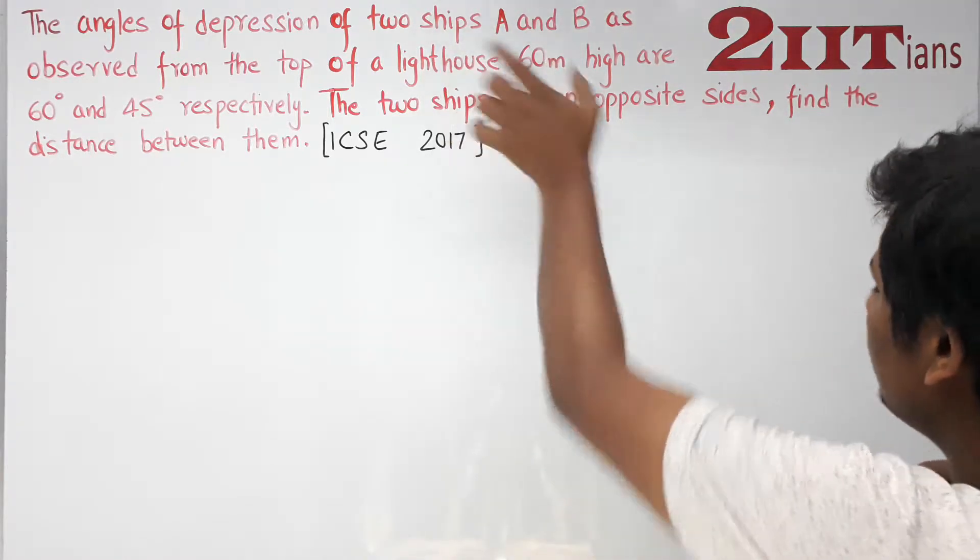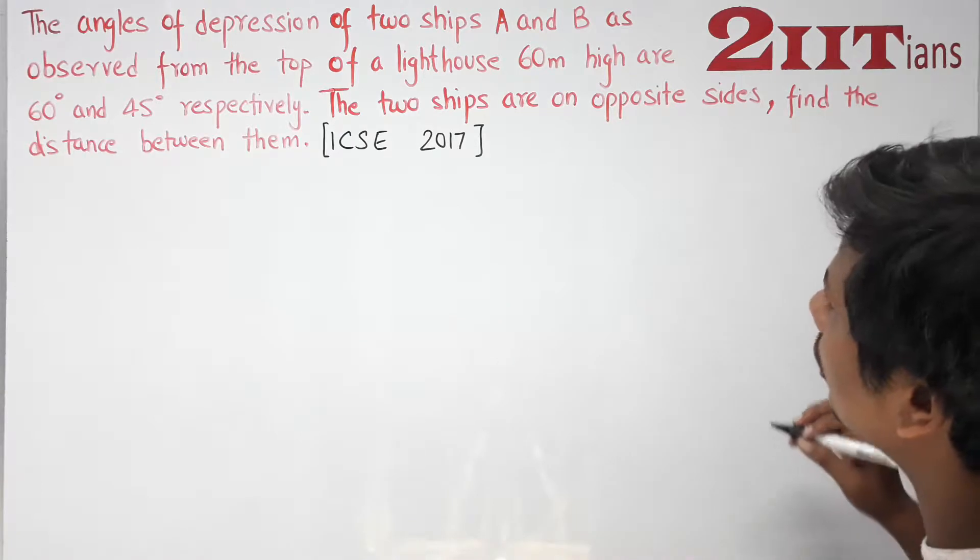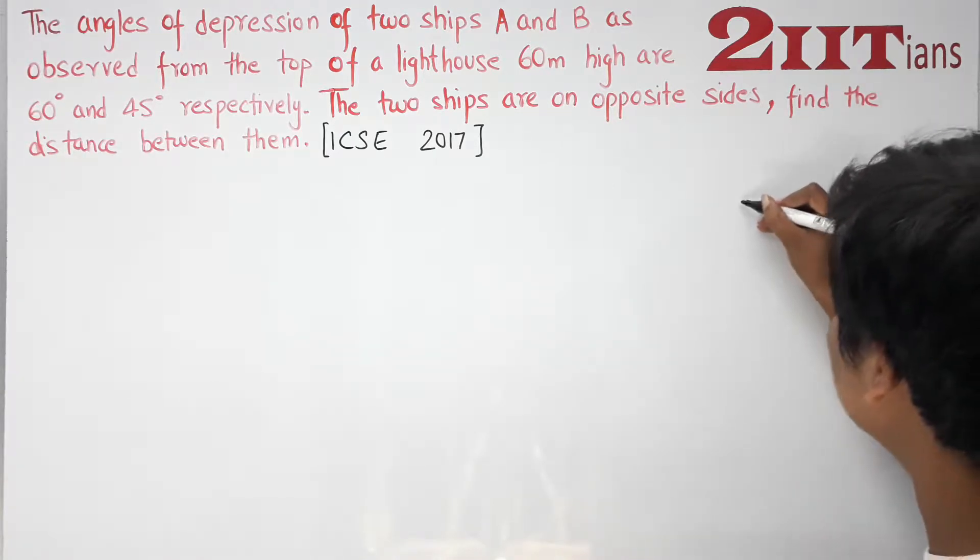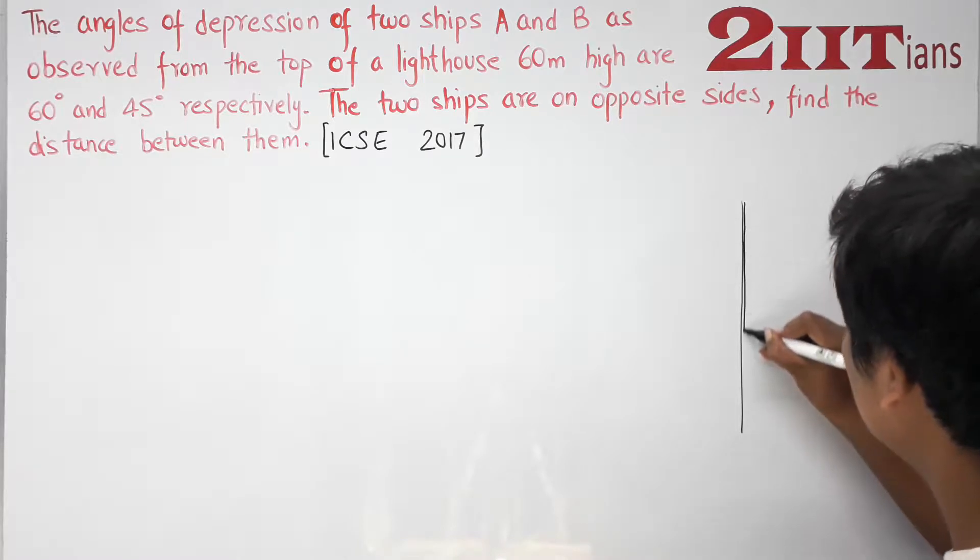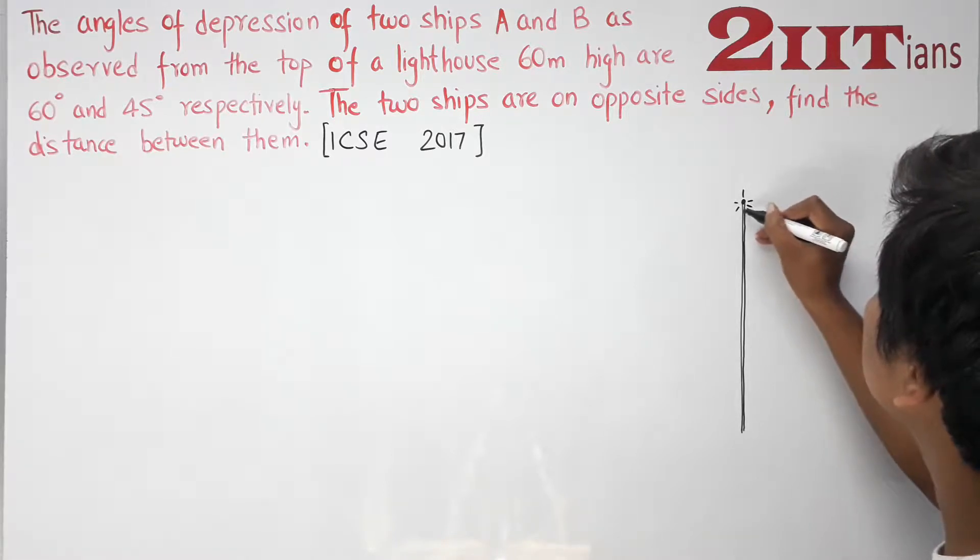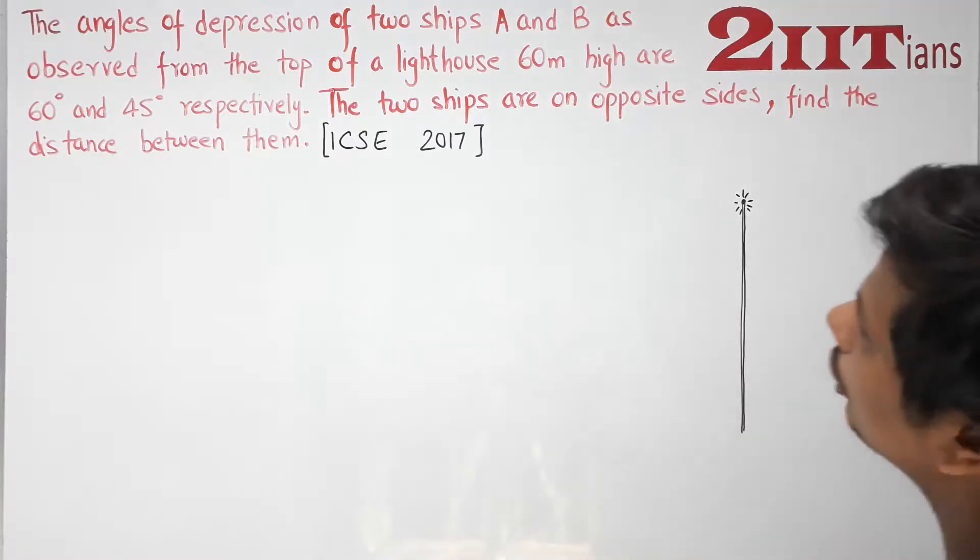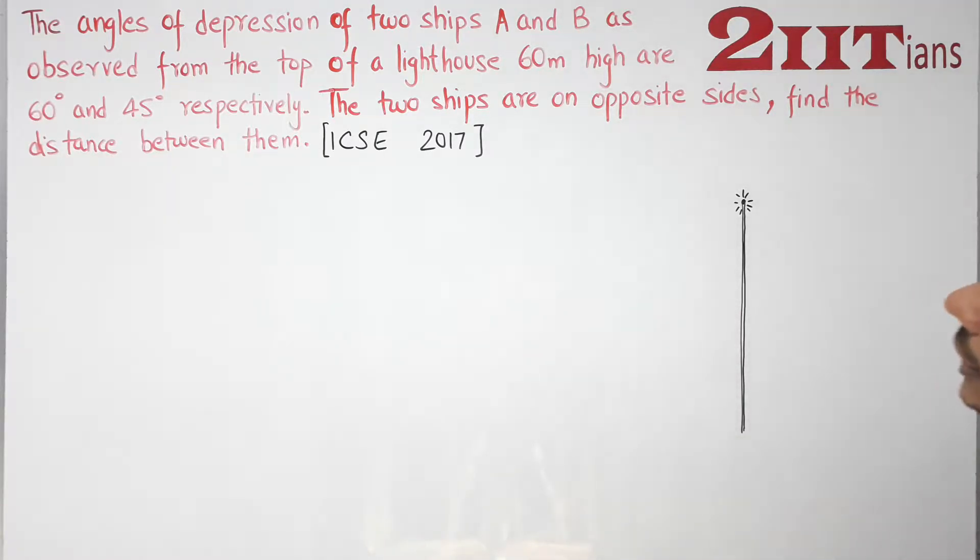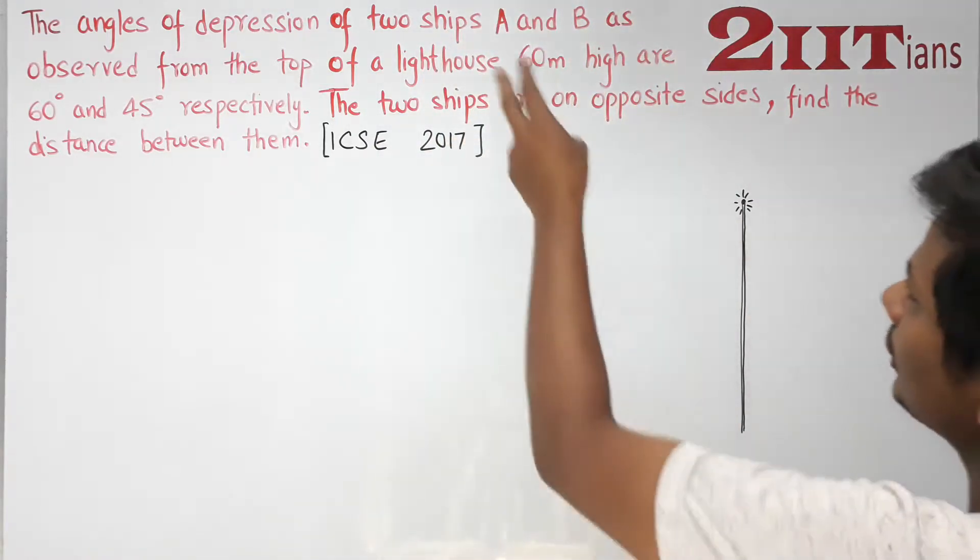First of all, the prominent figure is the lighthouse. The lighthouse is a straight line. The lighthouse has ships - one is ship A and the other is ship B, on opposite sides.